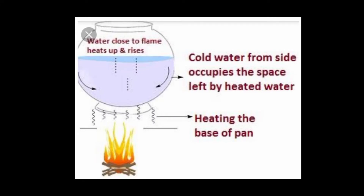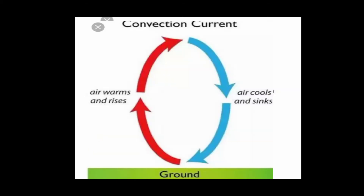When water is heated, the water near the flame gets hot. Hot water rises up, and the cold water from the sides moves down towards the source of heat. This water also gets hot and rises, and water from the sides moves down again. This process continues until the whole water gets heated. This mode of heat transfer is known as convection.